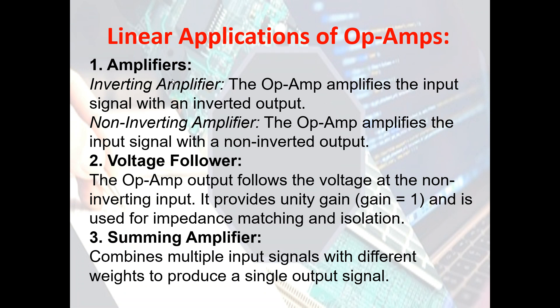As for the voltage follower, the op-amp output follows the voltage at the non-inverting input. It provides unity gain — gain is equal to one — and is used for impedance matching and isolation. The summing amplifier combines multiple input signals with different weights to produce a single output signal.